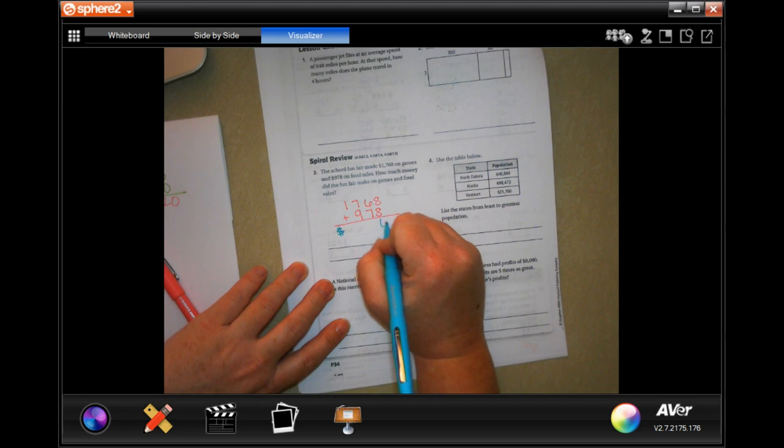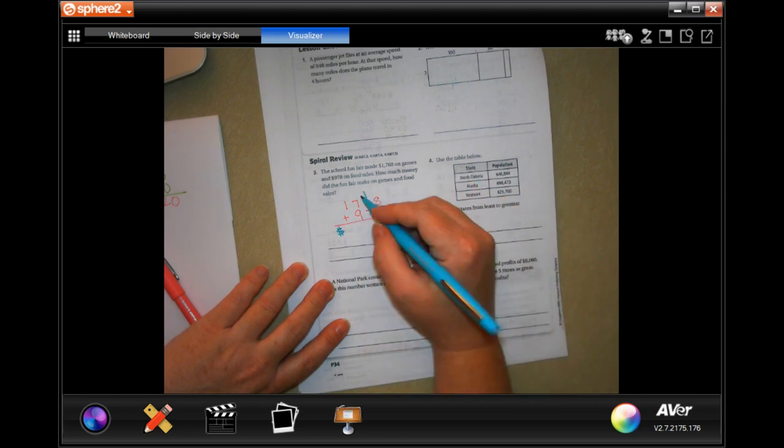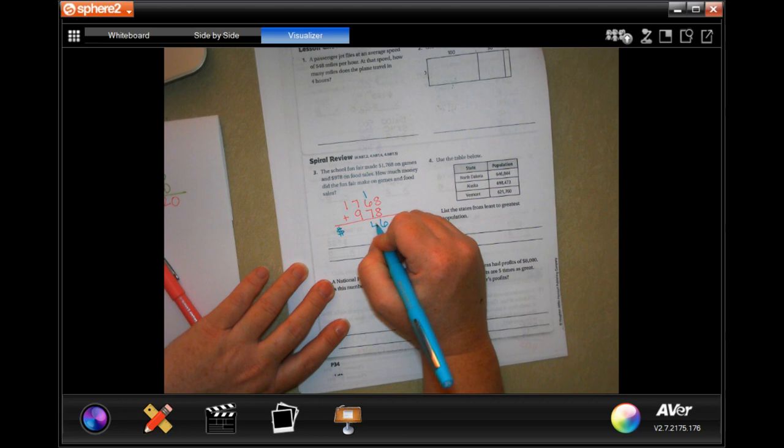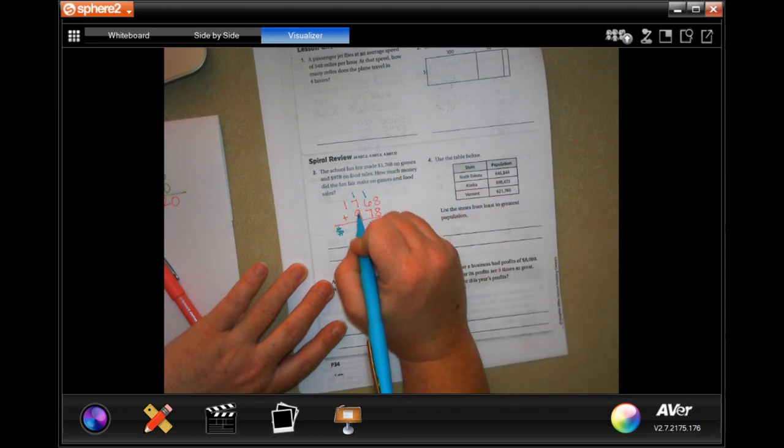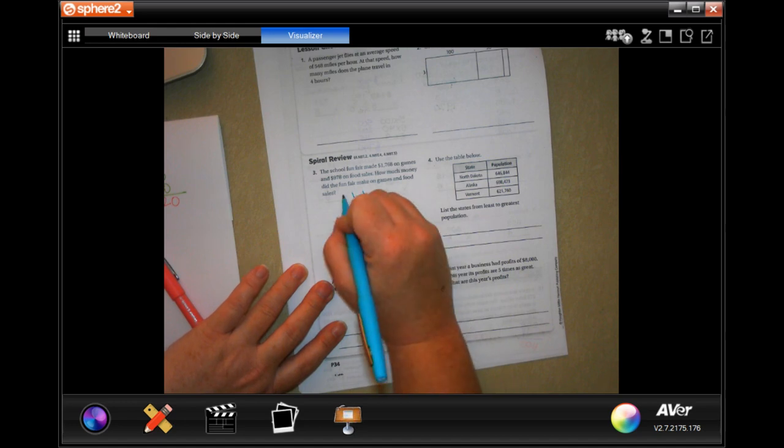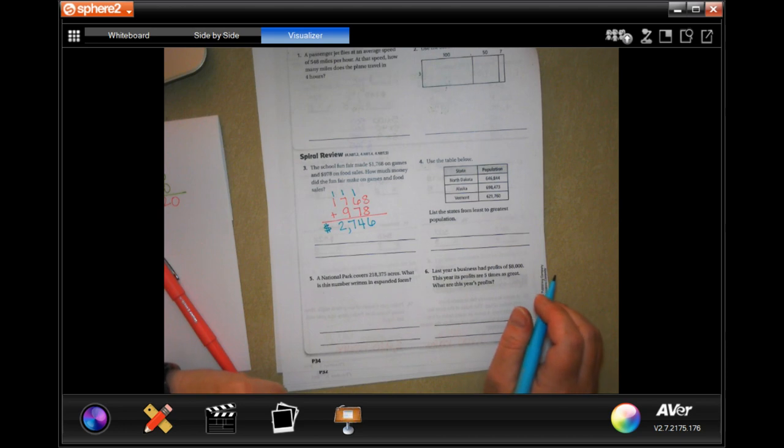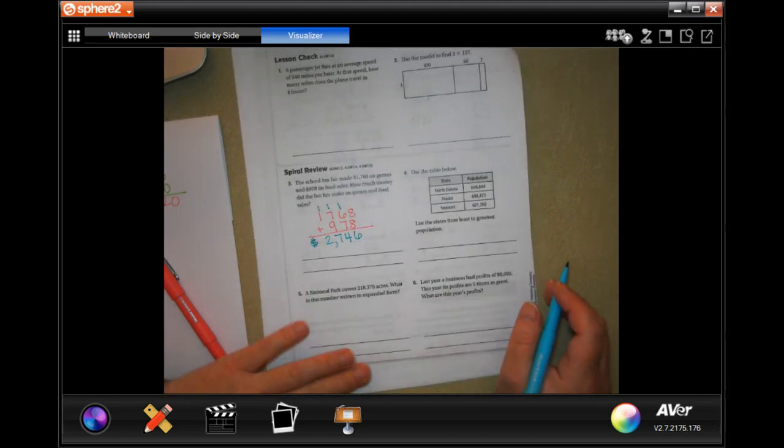8 plus 8, 16, carry the 1. 1 plus 6 is 7, plus 7 more is 14, carry the 1 again. 1 plus 7 is 8, plus 9 is 17, carry our 1. And 1 plus 1 is 2. So $2,746. All right.